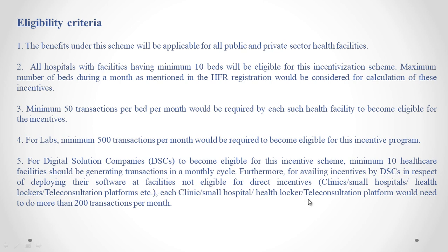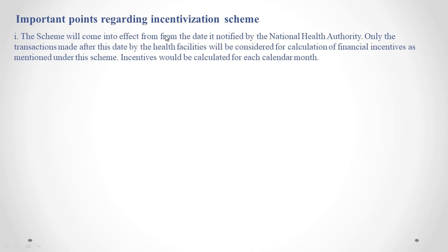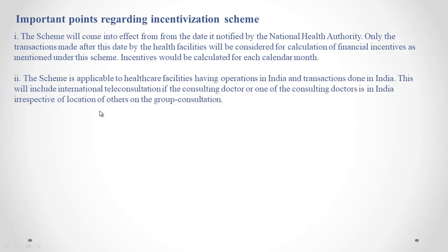For digital solution companies availing incentives in respect of facilities not eligible for direct incentives — such as clinics, small hospitals, health lockers, and teleconsultation platforms — each such clinic, small hospital, health care locker, or teleconsultation platform would need to do more than 200 transactions per month. Important points regarding the incentivization scheme: The scheme will come into effect from the date notified by the National Health Authority. Only transactions made after this date by health facilities will be considered for calculation of financial incentives. Incentives would be calculated for each calendar month. The scheme is applicable to healthcare facilities having operations in India and transactions done in India.